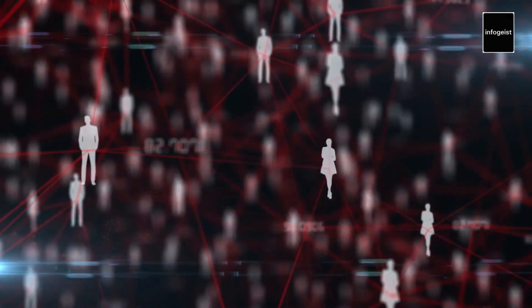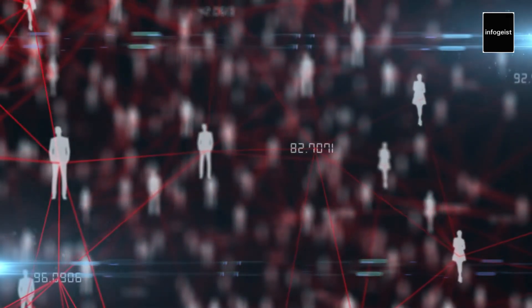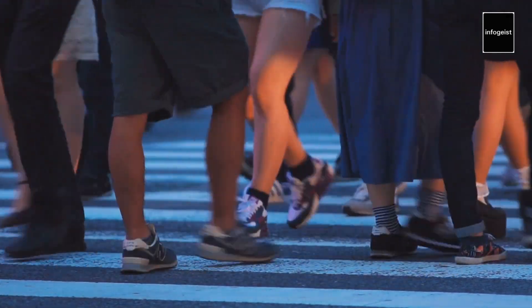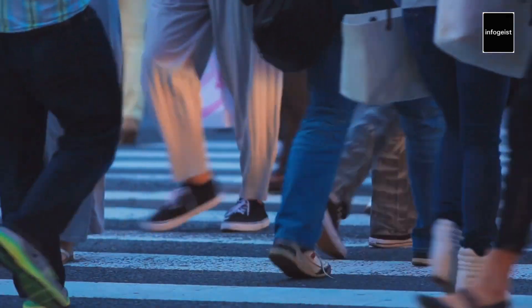Six degrees of separation is a theory proposing that everyone on earth is connected through a network of acquaintances in just a few steps. In essence, it suggests that you are only a handful of connections away from any other person in the world.